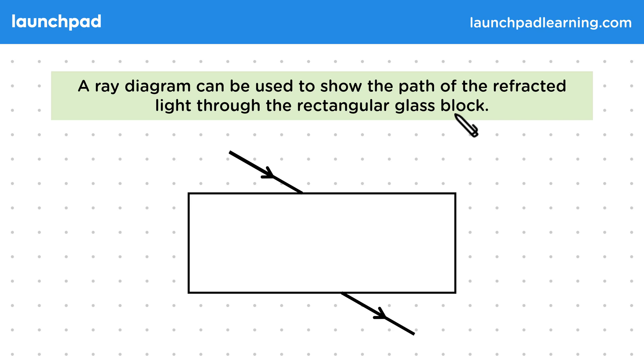A ray diagram is when we draw straight lines and arrows to show the directions light rays travel. Here we've already drawn the rays before entering the glass and exiting it. To complete our diagram we can simply join these two together with another straight line.